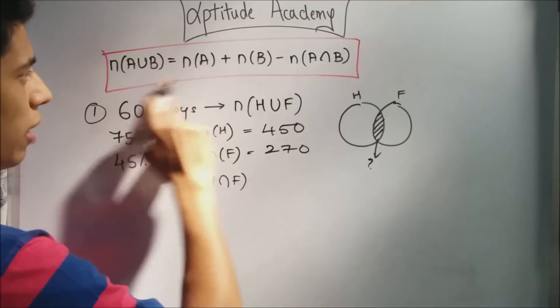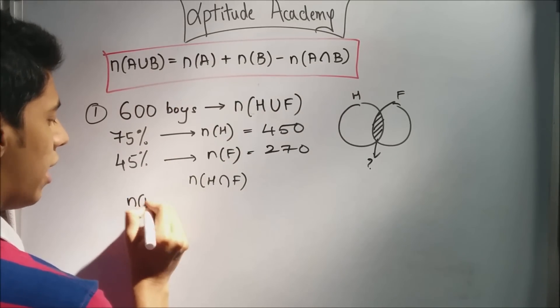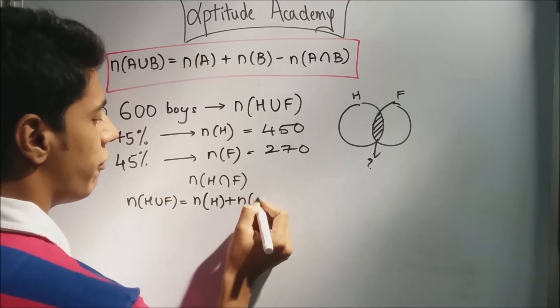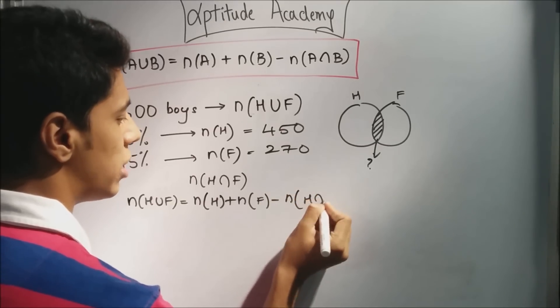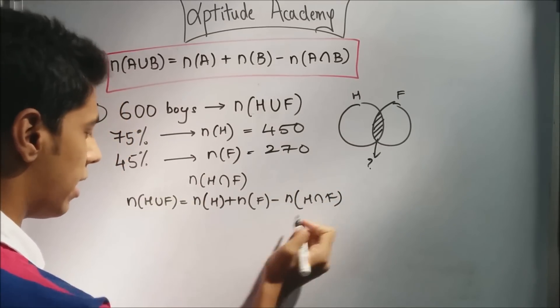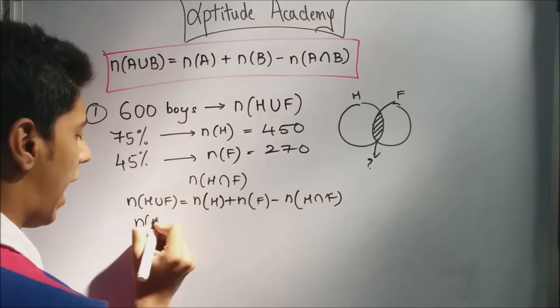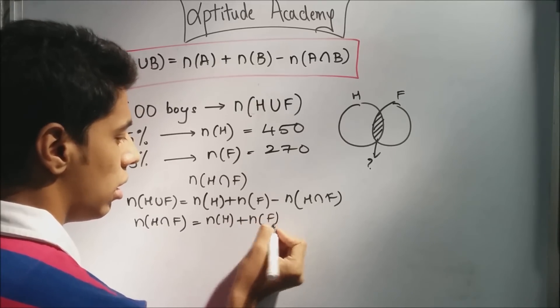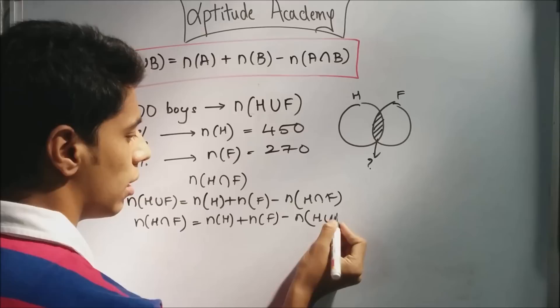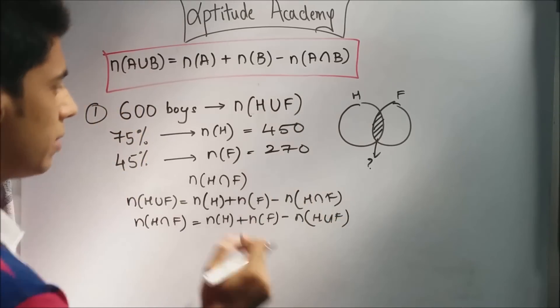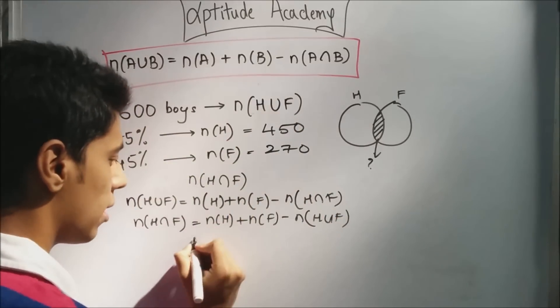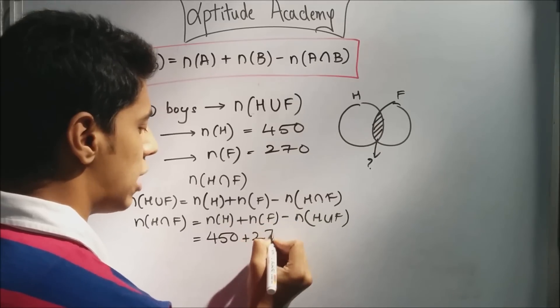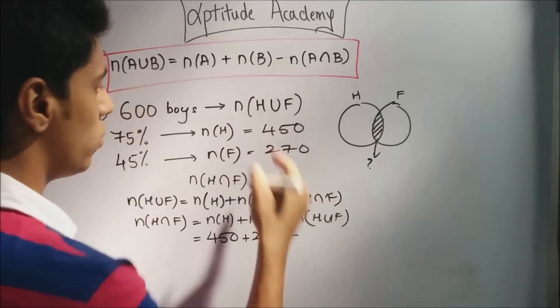Now, if you just substitute this in the equation here, you'll have n(H union F) is equal to n(H) plus n(F) minus n(H intersection F). If you take this on this side and bring it here, it will give you n(H intersection F) is equal to n(H) plus n(F) minus n(H union F). If you substitute the values here, we know n(H union F) is 600 boys. So, now n(H) is 450 plus 270, that's n(F), minus n(H union F) will be 600.